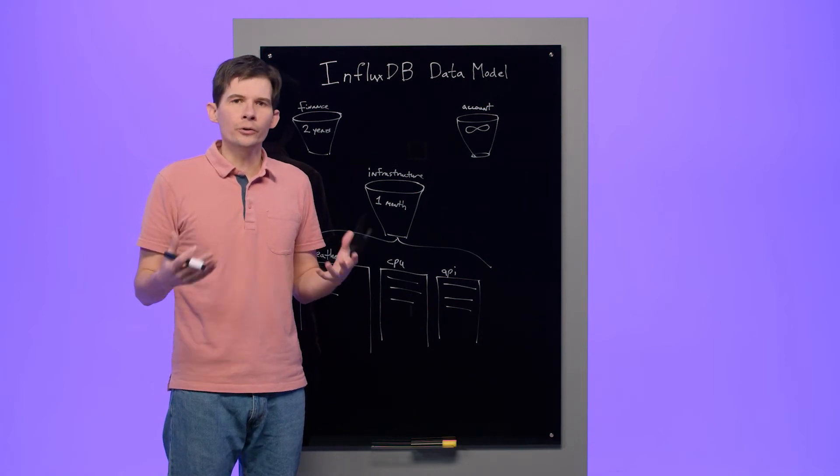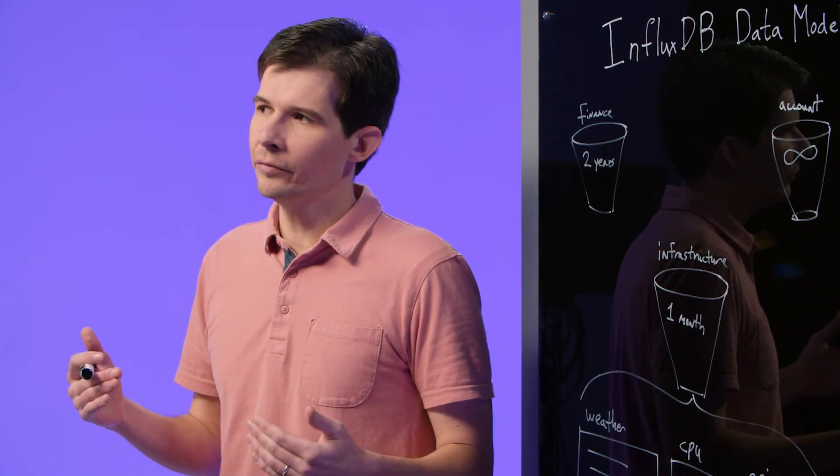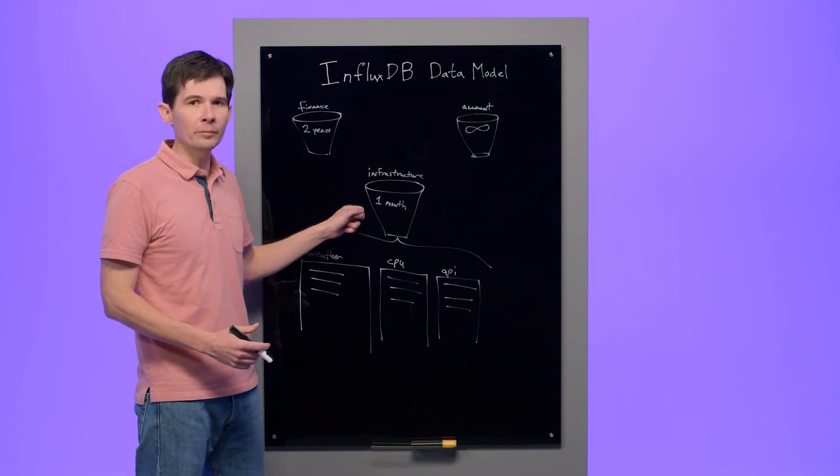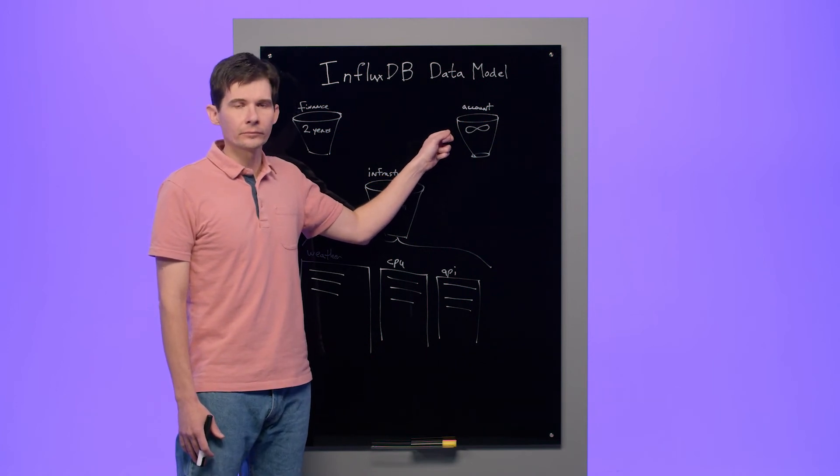Flux also includes some of the more traditional data processing features like pivot and join. So for example, the marketing team would like to identify accounts with high cost and low revenue. They want to watch that ratio over time, especially as marketing campaigns are launched. So we could query revenue data from finance, cost data from infrastructure, and tie those together with the account bucket, all with one Flux Query.